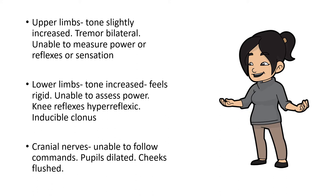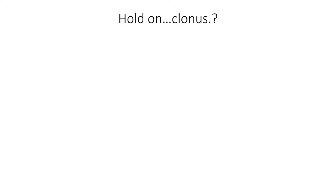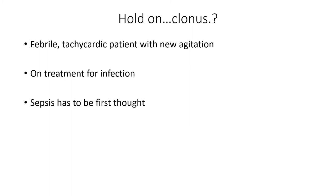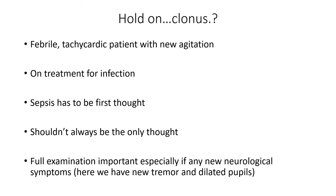Clonus is probably the most unexpected finding here, and it signifies something different is going on. Recapping this patient: we have a febrile, tachycardic patient with new agitation and confusion. The first thought is always sepsis — especially in a patient with a known infection on treatment, and particularly here because it's resistant treatment. But the clonus and tremor are your big clue that something else is probably going on, which is why a full neurological examination is so important. We've now found tremor, dilated pupils, and inducible clonus.